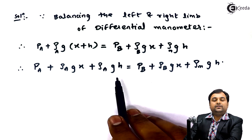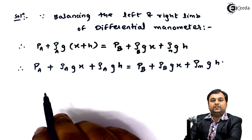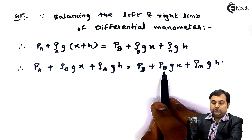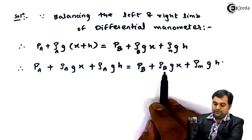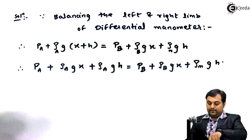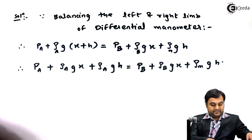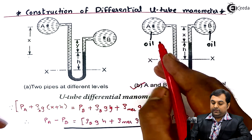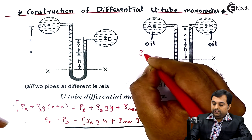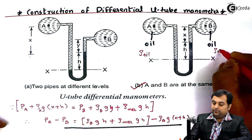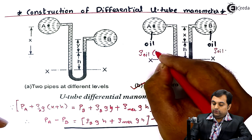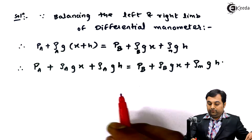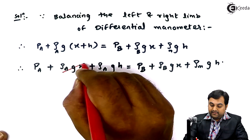Since we are using oil on both sides, ρ_A equals ρ_B — this is a very important conclusion. Both pipelines contain oil, so the density is the same in both pipes. Therefore, the ρ_A·g·x and ρ_B·g·x terms cancel out from both sides.